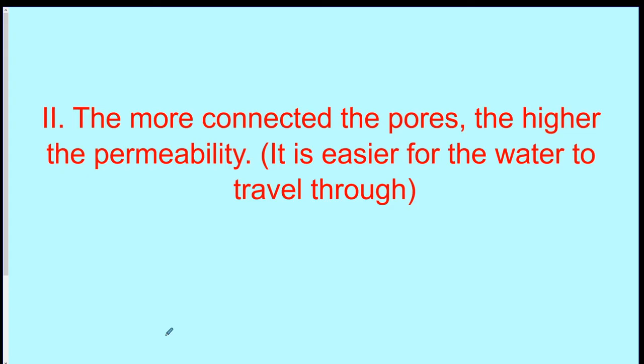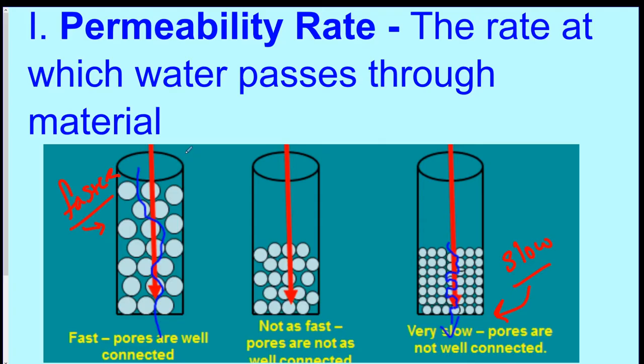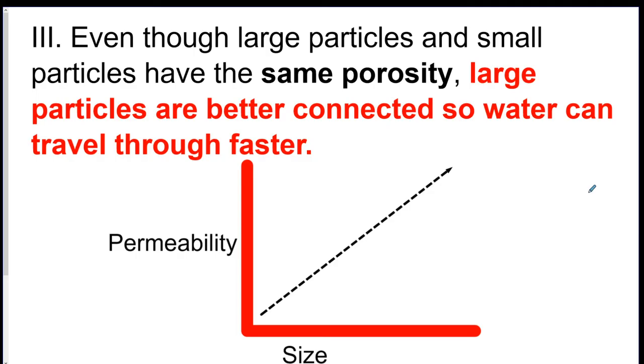The more connected the pores, the higher the permeability, so it's easier for the water to travel through it. These would be considered more connected. It's just another way of saying it's easier. These are less connected. So it's harder for the water to move through because the spaces are so much smaller. Even though large particles and small particles would have the same porosity, the large particles are better connected so water can actually get through them faster.